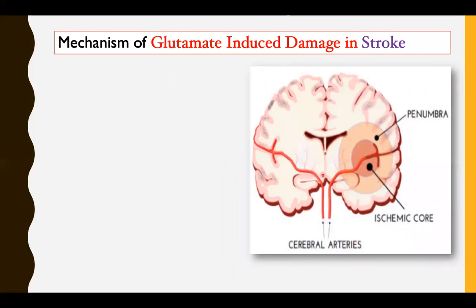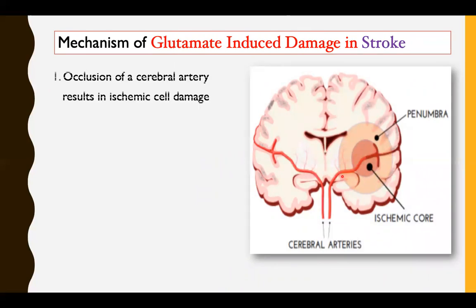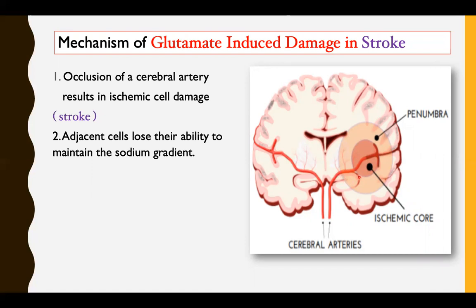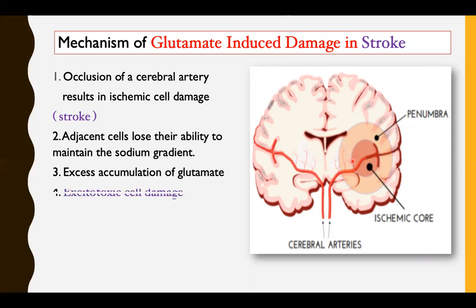In the brain, when there is a stroke, adjacent cells lose their ability to maintain the sodium gradient. As a result, a large amount of glutamate accumulates. This glutamate causes calcium influx via the NMDA receptor, resulting in excitotoxic cell damage around the ischemic core. The area around the ischemic core is known as the penumbra.